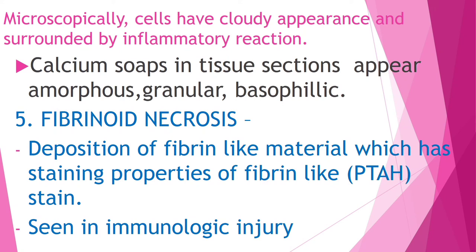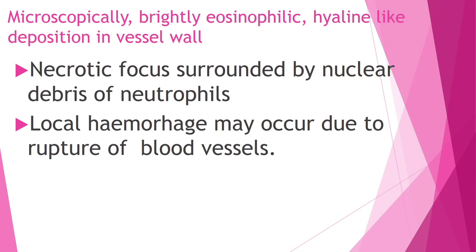The final type is fibrinoid necrosis. In this, there is deposition of fibrin-like material which has staining properties of fibrin. This can be seen in immunologic injuries. Microscopically, it appears brightly eosinophilic with hyaline-like deposition in the vessel wall. The necrotic focus is surrounded by nuclear debris of neutrophils, and local hemorrhage may occur due to rupture of blood vessels.